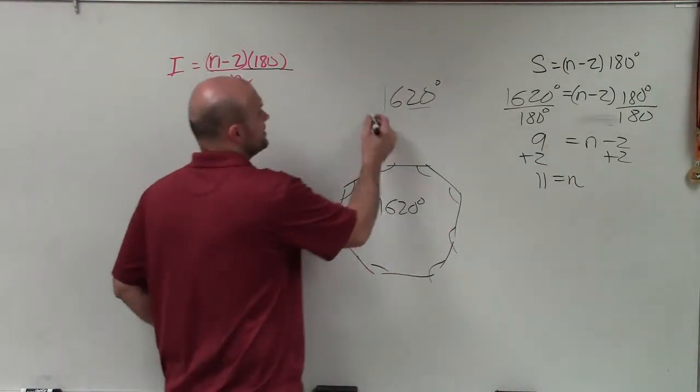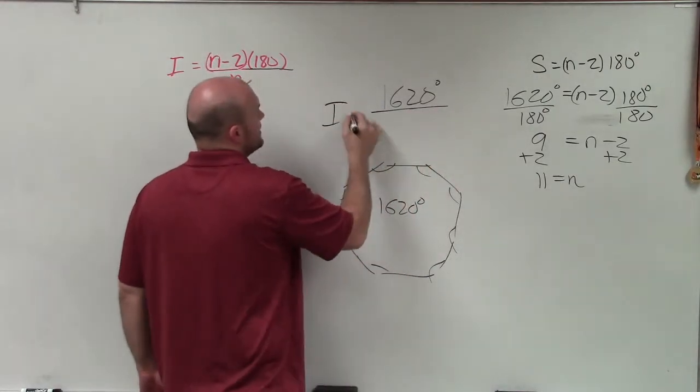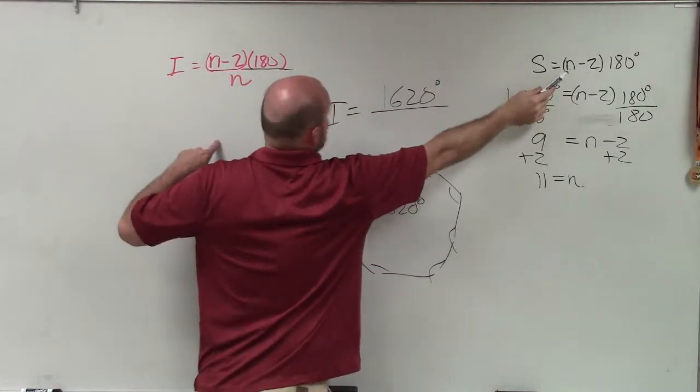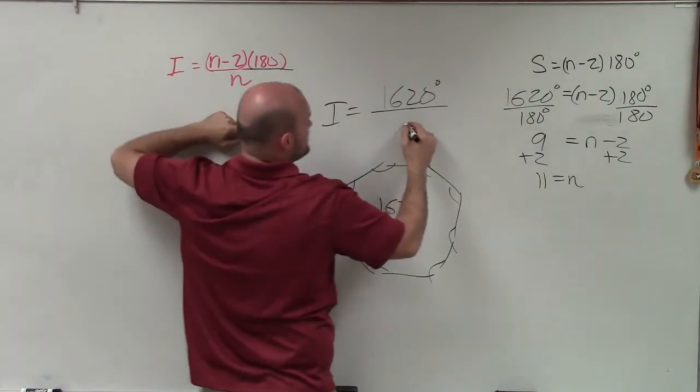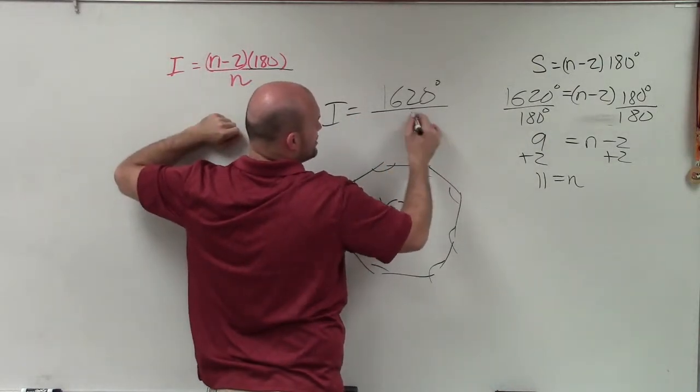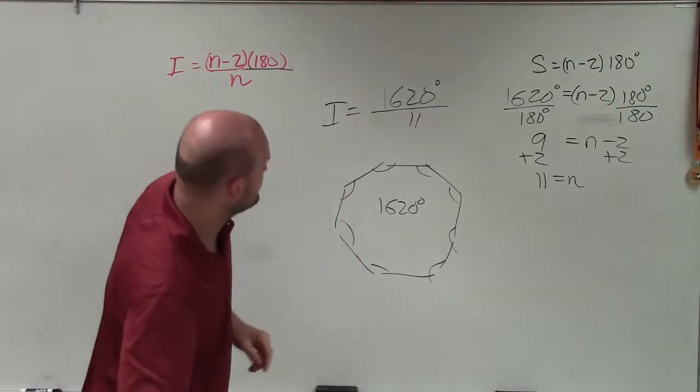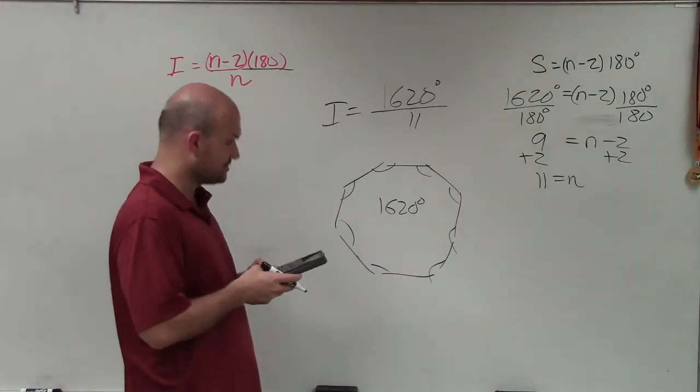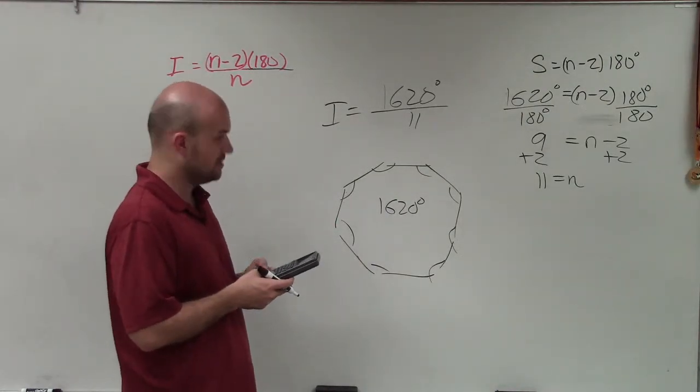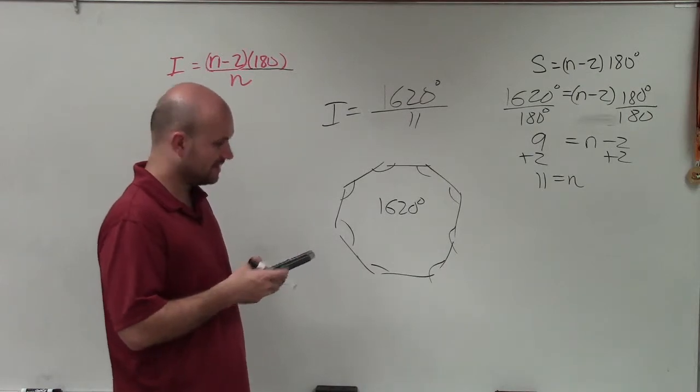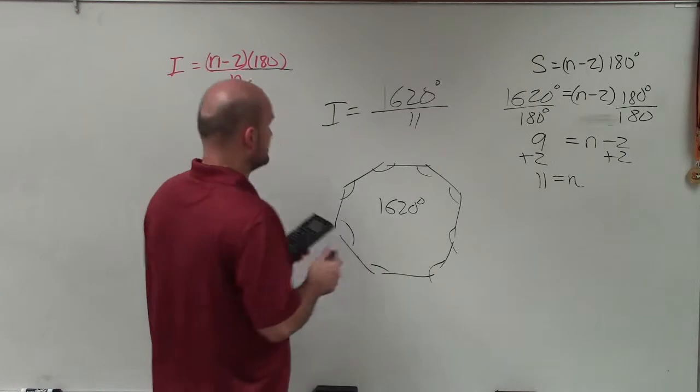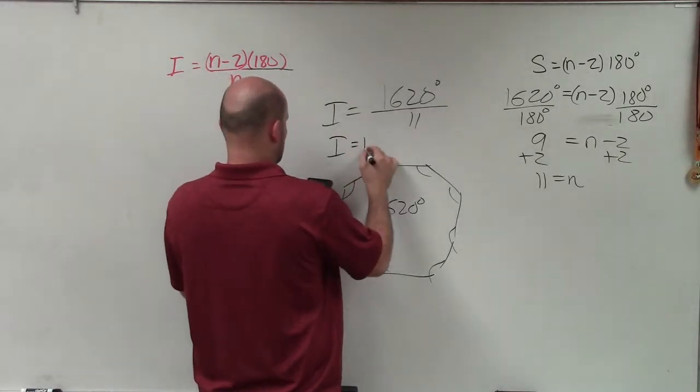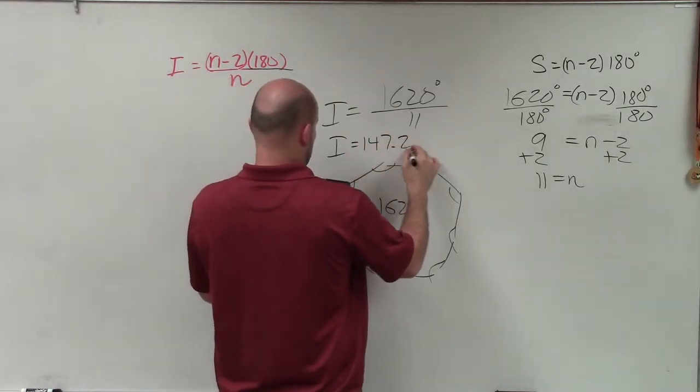Now I simply go ahead and take i, which is equal to, you notice, that's the sum. The sum is equal to 1,620 divided by n, which is, in this case, 11. So I will use my calculator on this one. Let's just double check my work here. 1,620 divided by 180 equals 9. 1,620 divided by 11 equals, so i equals 147.27.